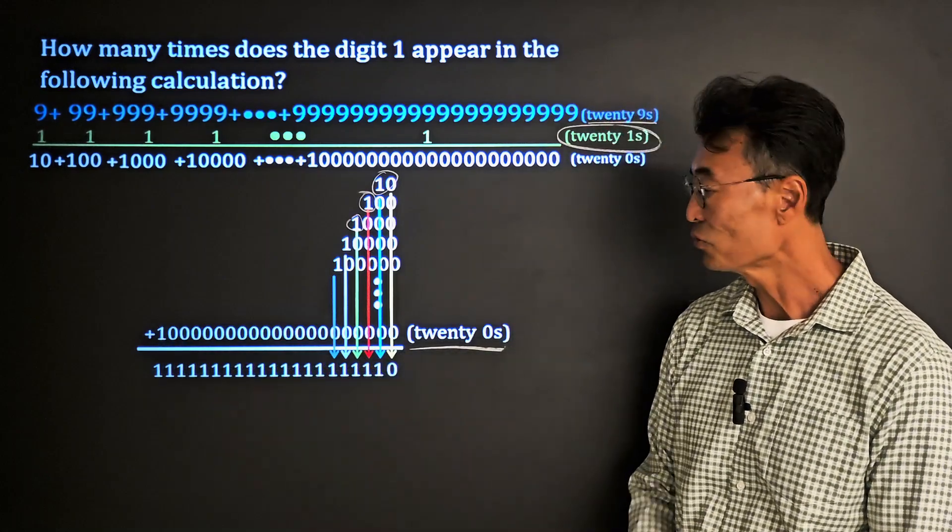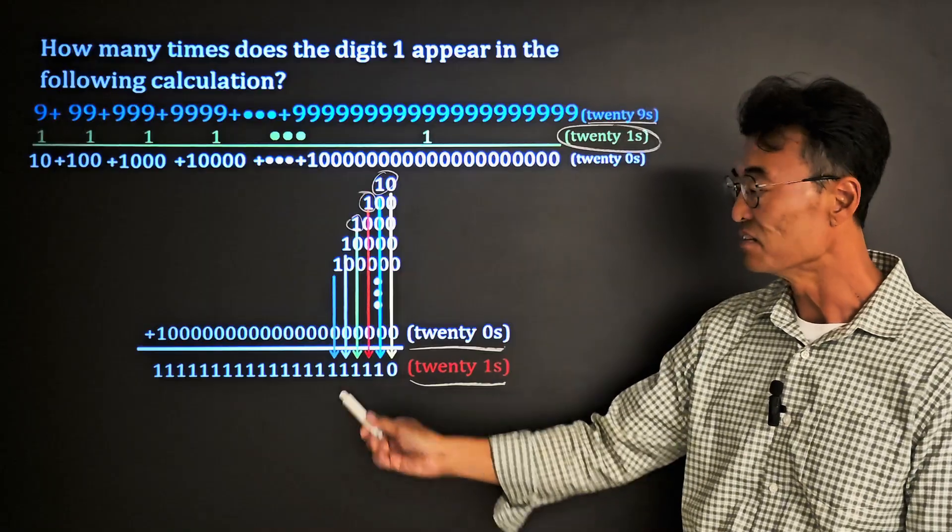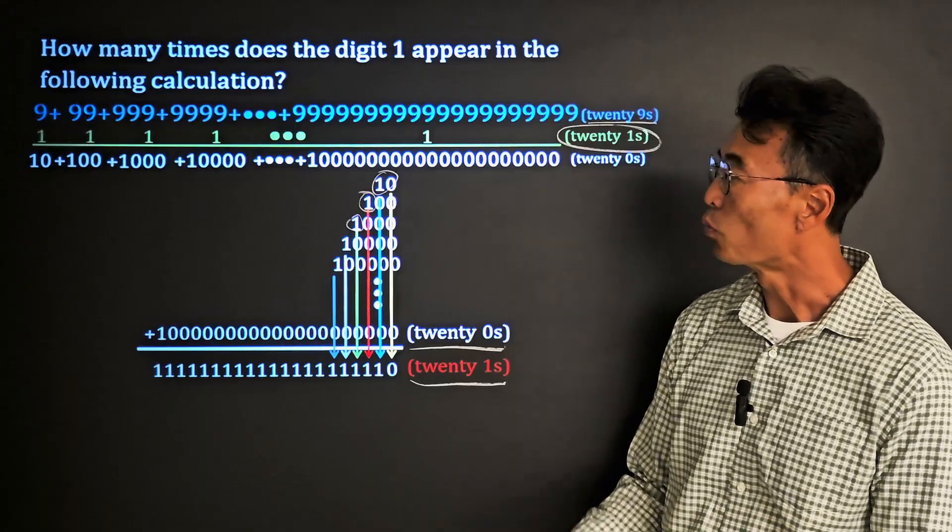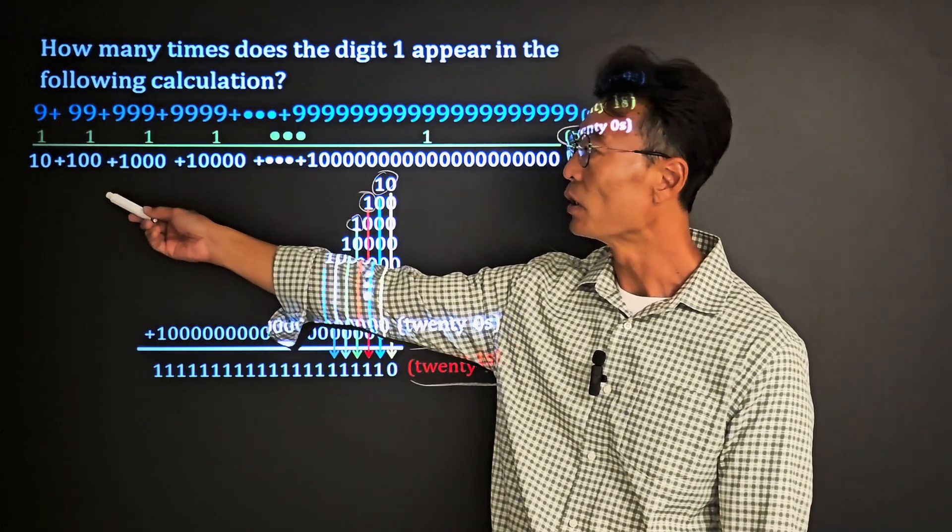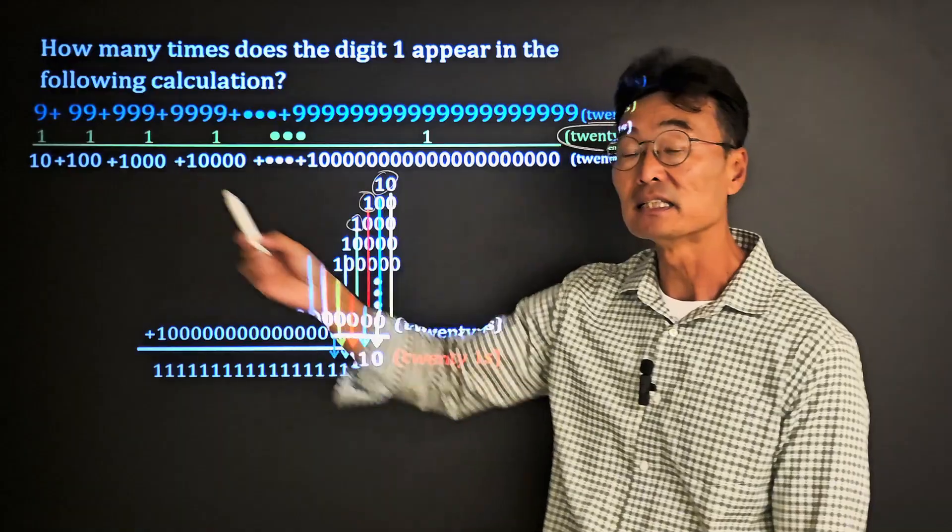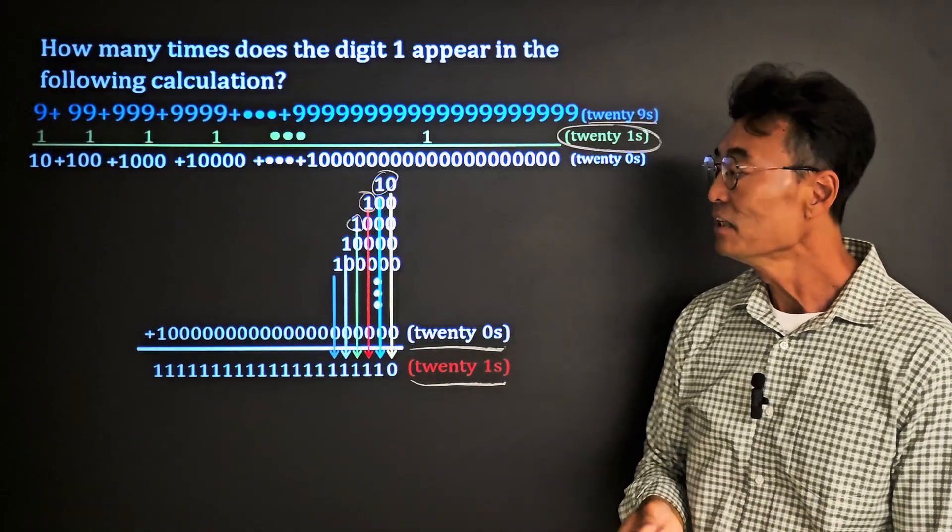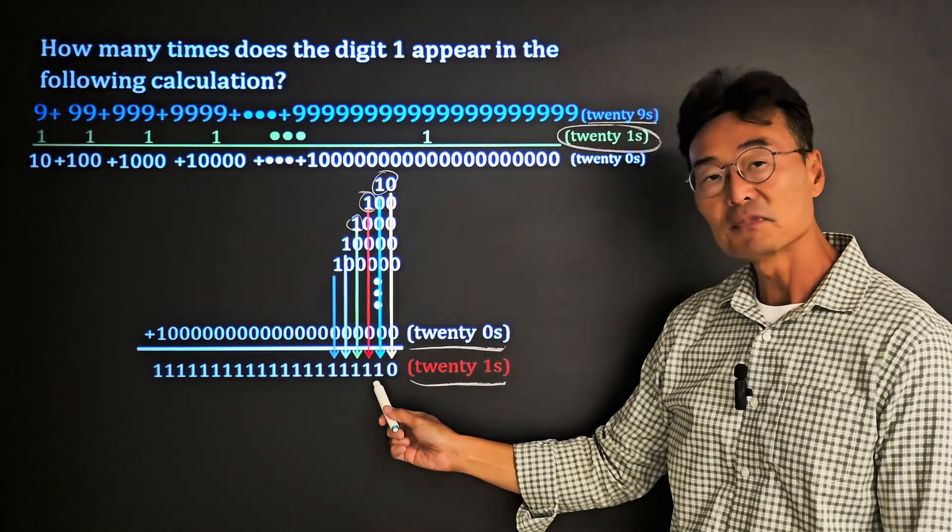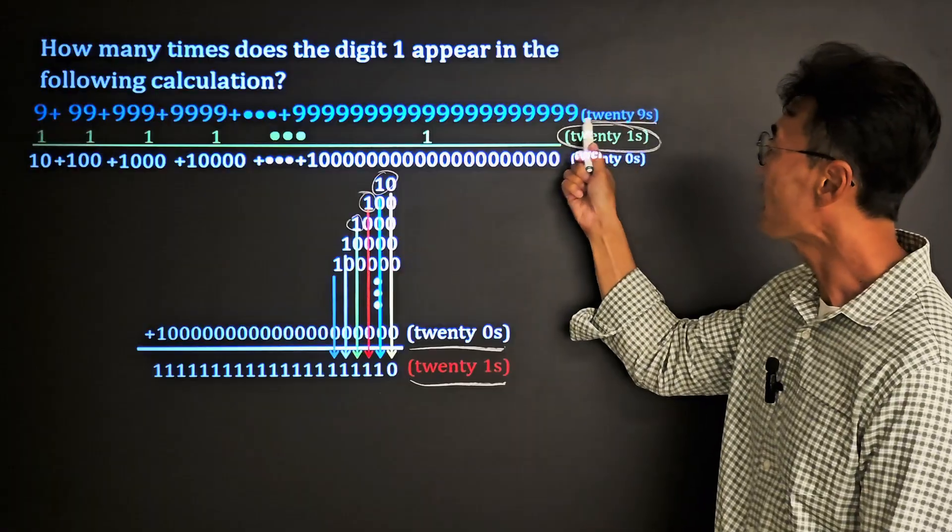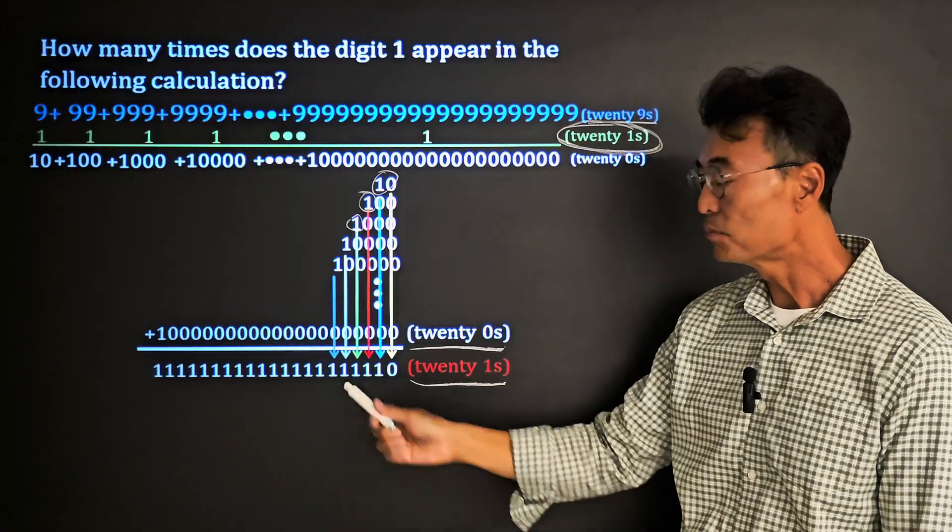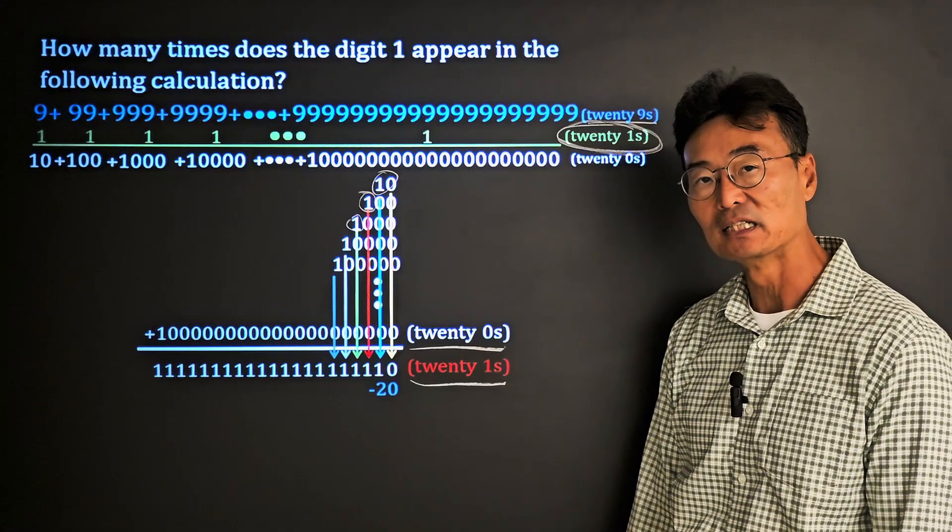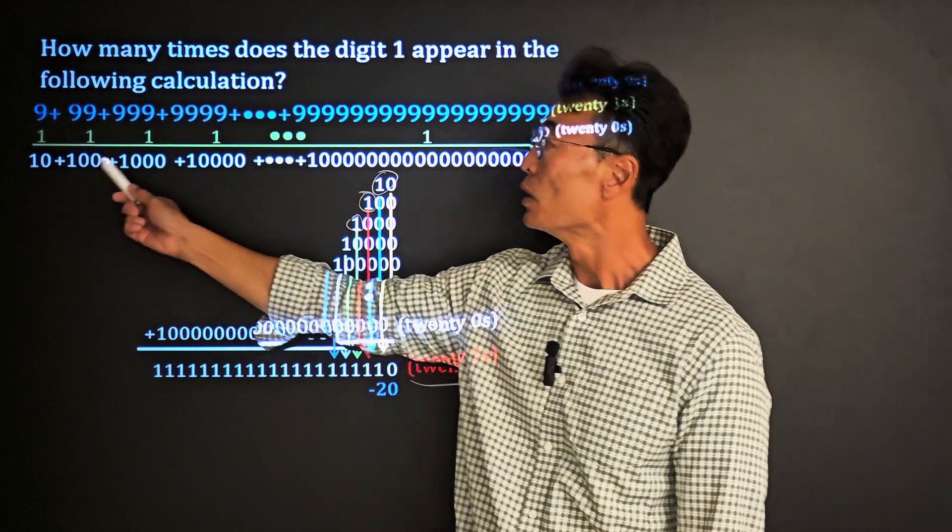Is that the answer? No. Remember we're not adding 10, 100, 1000, 10,000. We're adding 9, 99, 999. The sum that we have here is not the final sum. Rather, we need to wait and subtract the numbers that we added from this sum. So what we have to do is we need to wait and subtract 20. Again, we added 1, 1, 1, 1 twenty times, so we added an extra 20.